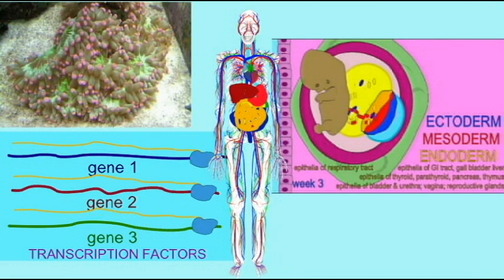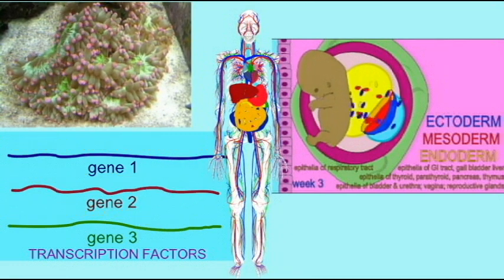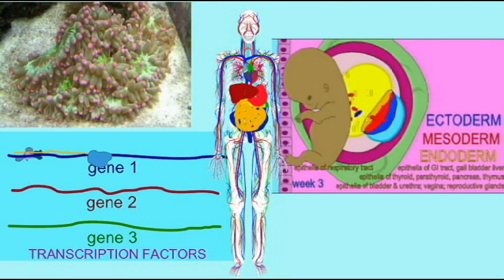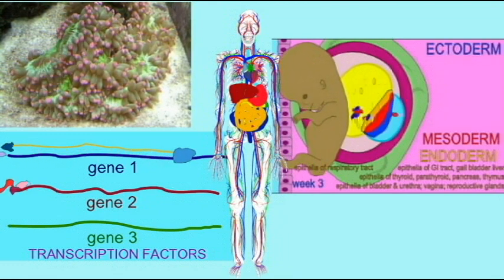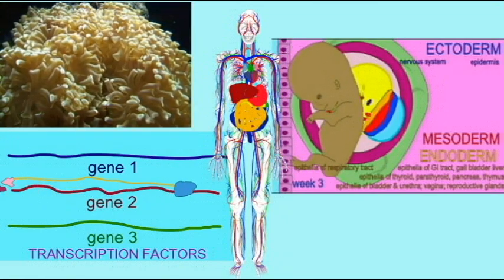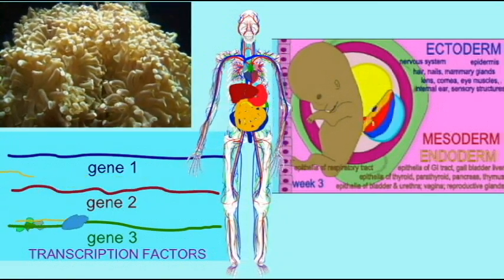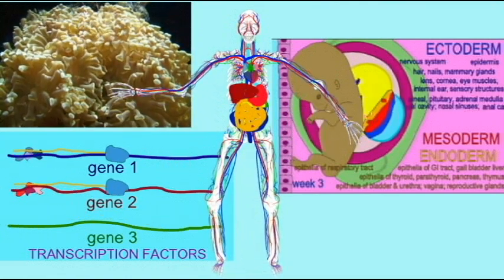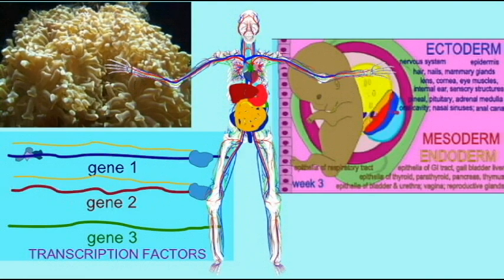These are kind of master switches which can turn genes on or off. And so, therefore, an organism can possess many genes in its genomes, but an individual cell can decide which genes get turned on or off, allowing a muscle cell to be different from a nerve cell, different from a gland cell.